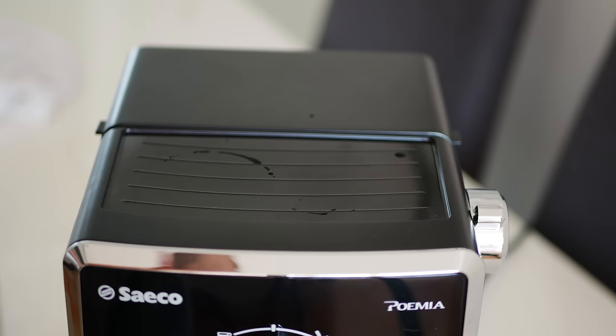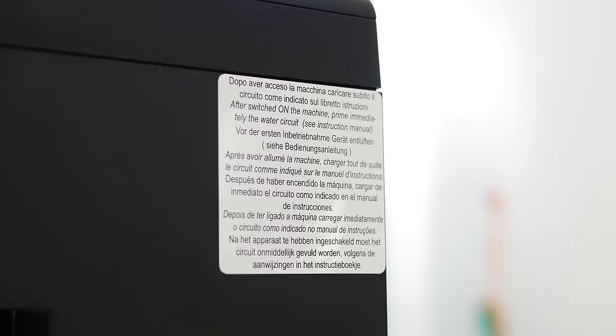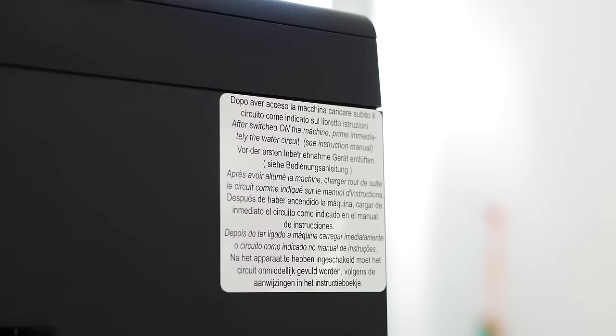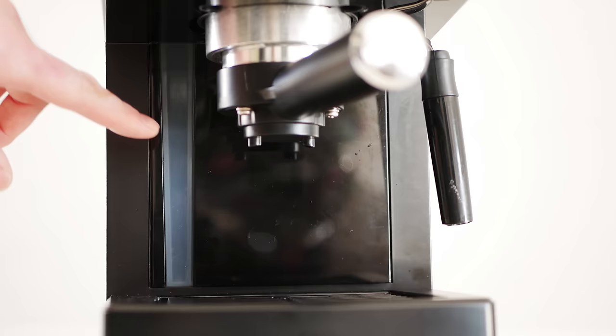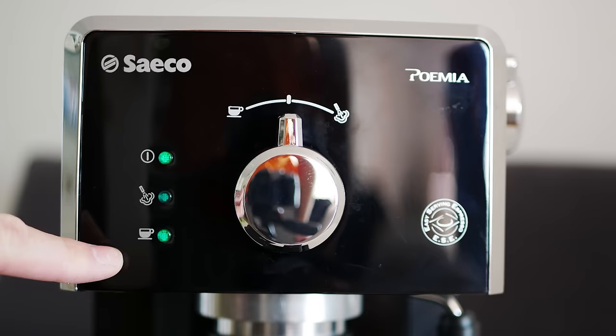In the front upper side of the machine is the cup holder warmer. It can hold two espresso cups. The left front side is transparent so you can see the level of the water in the water tank. You have three lights at the front: one is for the power, second is for the steam, and third is for the coffee.